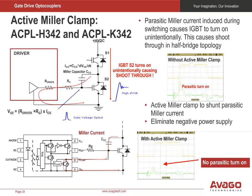Let's now discuss how an IGBT's Miller capacitance CCG can inadvertently cause an IGBT to turn on. Without the Miller capacitor, S2 turns off smoothly. With the Miller capacitance, Miller current flows and raises VG, which could be high enough to turn on the IGBT. An active Miller clamp is included in our ACPL-H342 and ACPL-K342 drivers to prevent this. A Miller clamp allows control of the Miller current during a high dV/dT situation, and it can also eliminate the use of a negative power supply voltage by quickly discharging the large gate capacitance of the IGBT to a low level without affecting the IGBT turn-off characteristics.